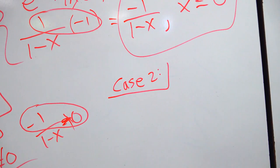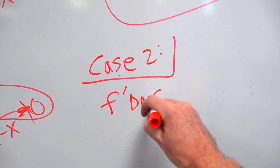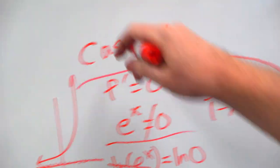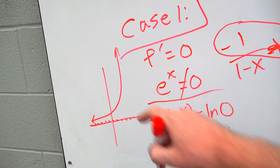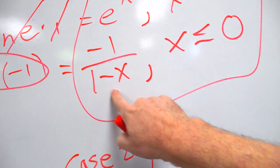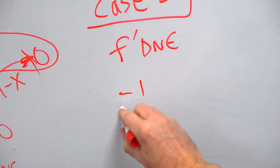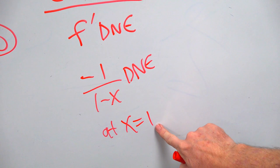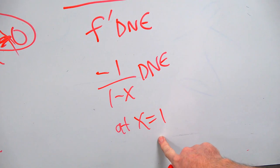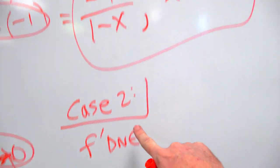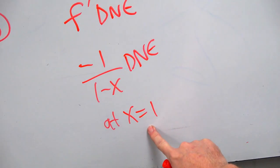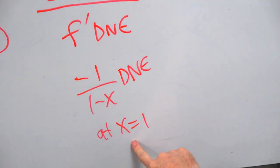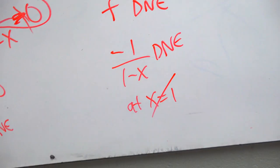Case 2: is there any place that this function is non-existent — f prime DNE? Does e to the x ever not exist? No, e to the x is just a nice continuous function. It always exists — no holes, no jumps, no vertical asymptotes. This one, negative 1 over (1 minus x), does not exist at x equals positive 1, because that gives you 1 minus 1 in the denominator. But is this a factor today? Remember piecewise functions have parameters and domains. x equals 1 is not less than or equal to 0, so I intentionally avoided that bad place. It's invalid because it does not fit the domain. So on some minor technicalities here, we basically got nothing from Case 1 or Case 2.